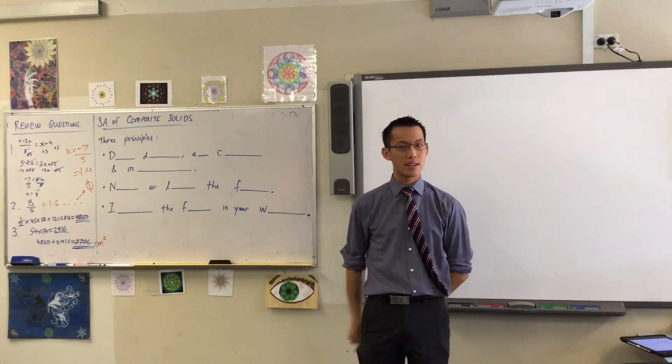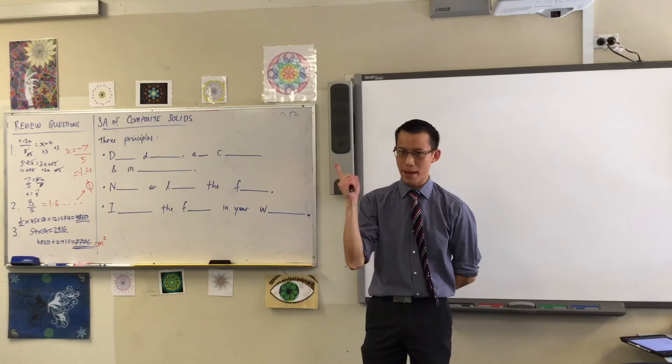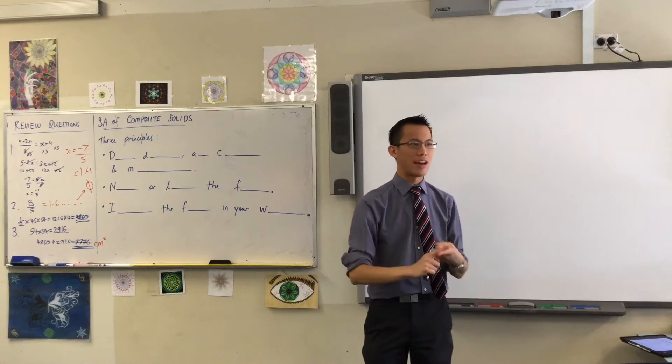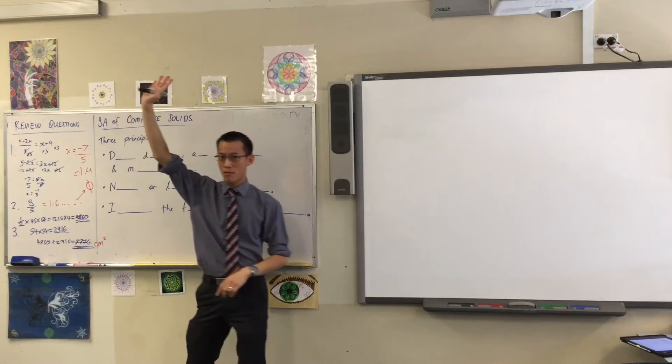Now we're coming towards the end of surface area. We've looked at lots of different kinds of shapes. Think back to last week. What was the first kind of, the simplest kind of shape that we worked out the surface area of? Hands up, does anyone remember?